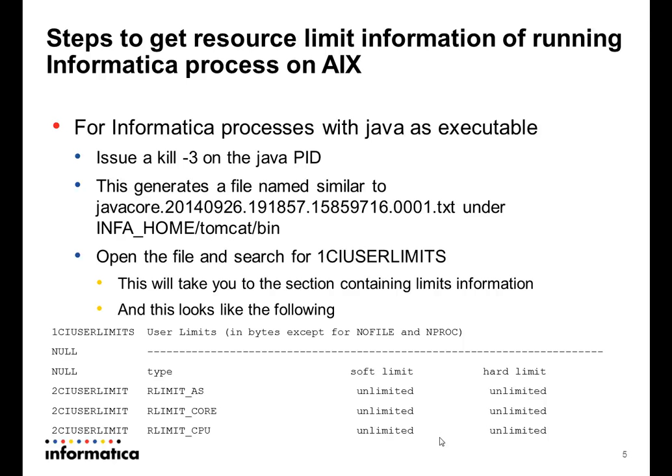I will show two ways of doing that. First, for a Java process, and second, for a native process. For an Informatica Java process on AIX, you need to find the PID of the Java process, then issue a kill -3 or send a SIGQUIT signal for that Java process ID. This will generate a file named similar to javacore followed by numbers, under the InfaHome/tomcat/bin directory. To find the user limits or resource limits, search for 'CI user limits' in that file. This will take you to the section containing the limits information, where you will find the various limits listed out.